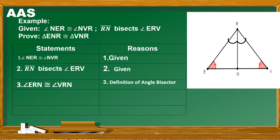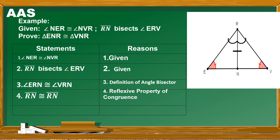For the fourth statement, from the illustration, what is still needed is segment RN congruent to segment RN, by the reflexive property of congruence. With this, we can now prove that triangle ENR is congruent to triangle VNR by the AAS theorem. Those are the examples of proving triangles using SSS, SAS, ASA, and AAS.